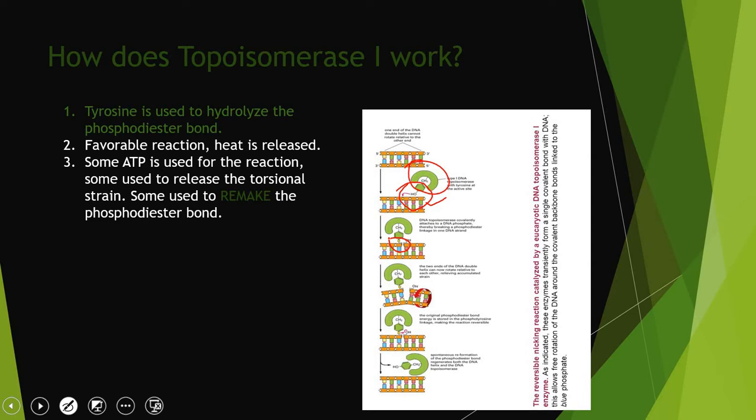This is a very favorable reaction because heat is released. Some ATP is used for the reaction. Some is used to release the torsional strain - remember, it's in the double helix, there's a lot of strain. This strand is able to rotate. Since it can rotate, that relieves the strain.